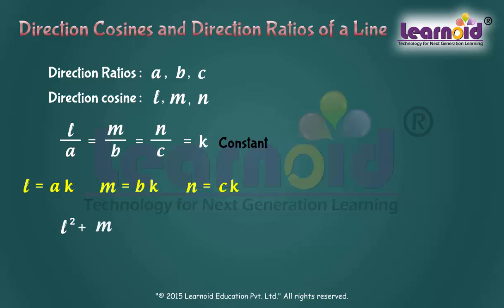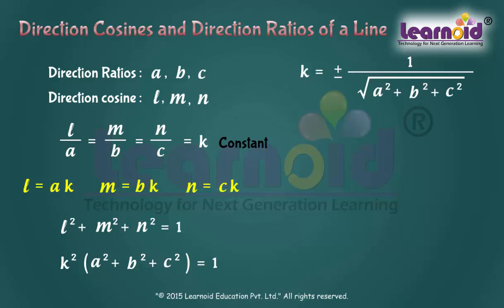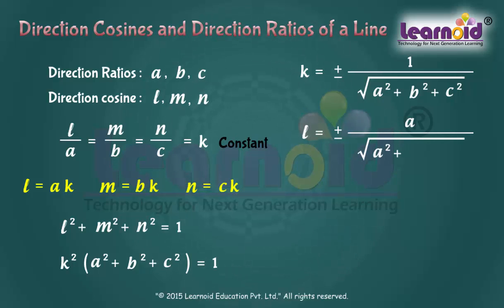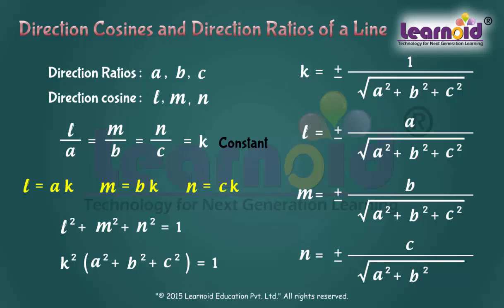But L squared plus M squared plus N squared is equal to 1. So, K squared into A squared plus B squared plus C squared is equal to 1. Or, K is equal to plus or minus 1 by the square root of A squared plus B squared plus C squared. Hence, the Direction Cosines of the line are: L is equal to plus or minus A by the square root of A squared plus B squared plus C squared; M is equal to plus or minus B by the same; N is equal to plus or minus C by the same.